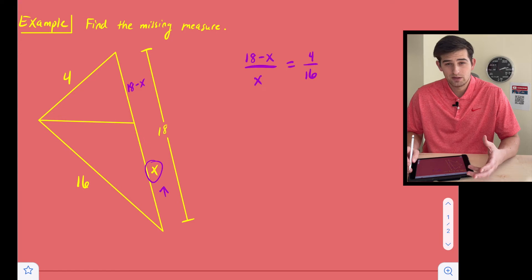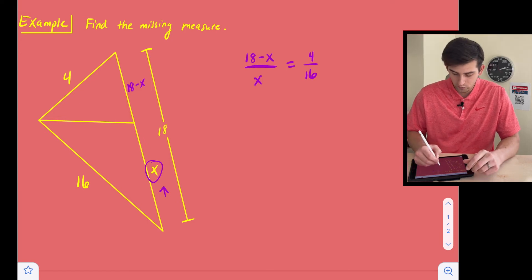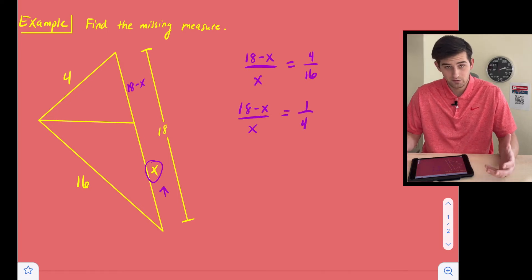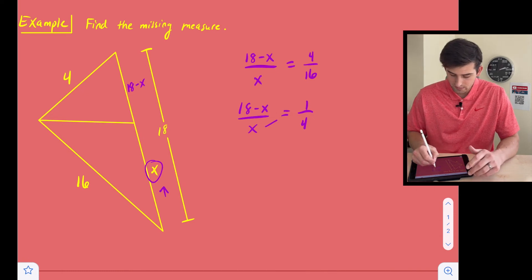All right, now we can go ahead and cross multiply, but let's simplify 4 over 16 just to make the math a little easier for us. So 4 over 16 would just simplify to 1/4. We could divide 4 and 16 both by 4. And now we can cross multiply.